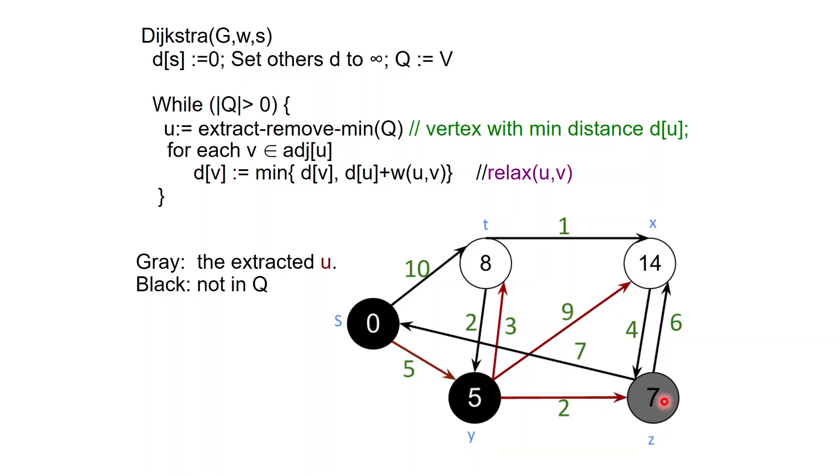Then again, we extract the minimum, which is Z and then we relax all the neighbors. That's going to set the distance of X to 13.